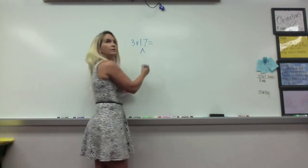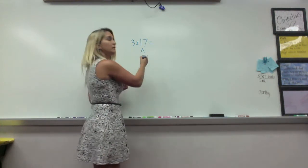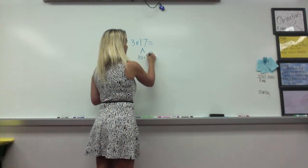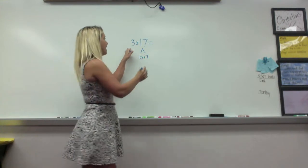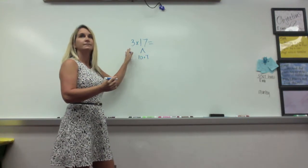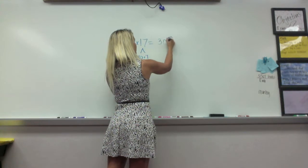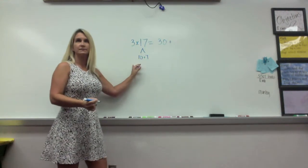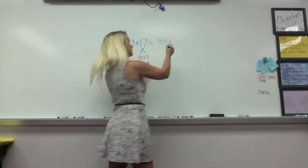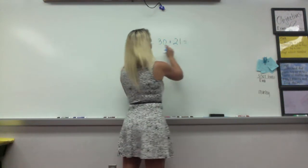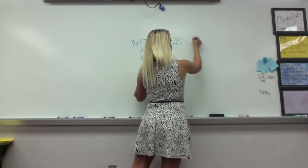What did we distribute it to? 10 and 7. And then we did what? 3 times 10 is what, class? 30. And then what else did we do? 3 times 7. 3 times 7 is? 21. And 30 plus 21 equals? 51.